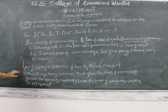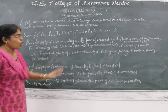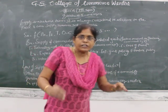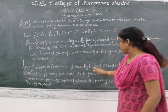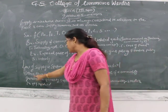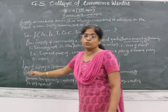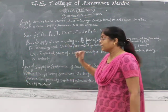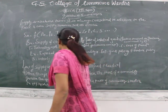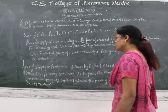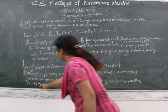Now we move on to the law of supply — the statement of the law. The law of supply, like the law of demand, was introduced by economist Alfred Marshall. The statement is: other things being constant, the higher the price of a commodity, the greater the quantity supplied; and the lower the price of the commodity, the smaller the quantity supplied. You cannot change a single word when writing this in the exam.